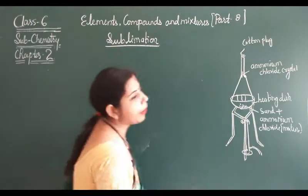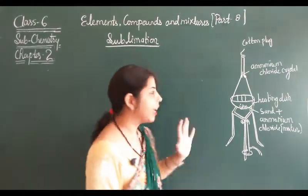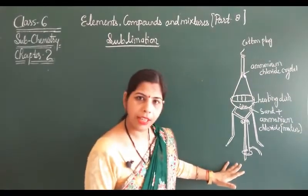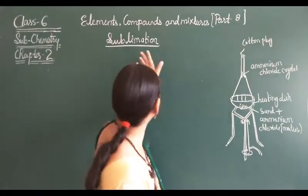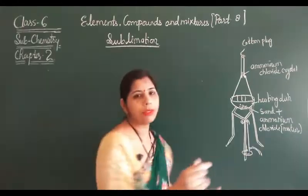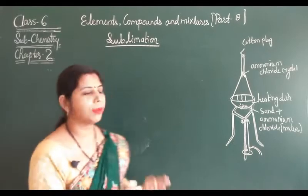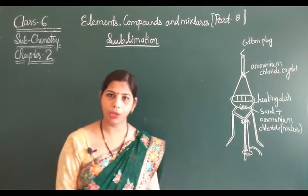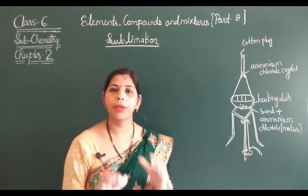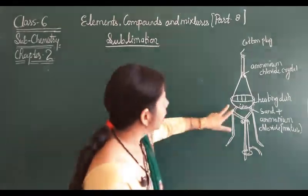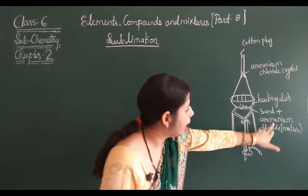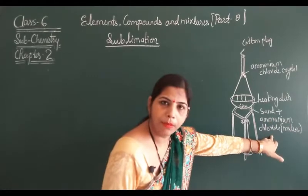So with the help of sublimation, how can we separate a mixture? This is the apparatus for separating the mixture by the process of sublimation. We apply this process when one substance in the mixture can undergo sublimation. Here I have taken a mixture of sand and ammonium chloride — ammonium chloride is a sublime component.